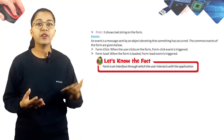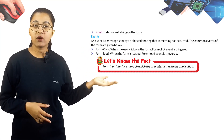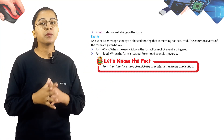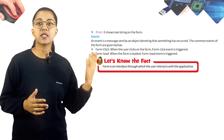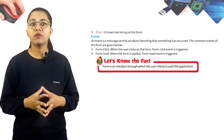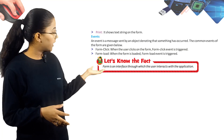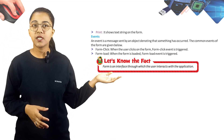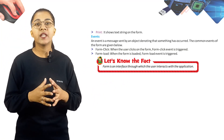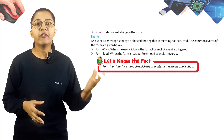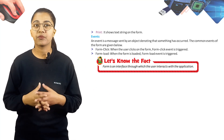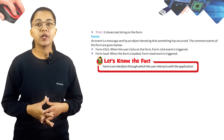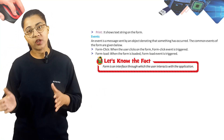Now we have Events. An event is a message sent by an object denoting that something has occurred. Common events of the form are: Form_Click — triggered when the user clicks on the form; and Form_Load — triggered when the form is loaded.